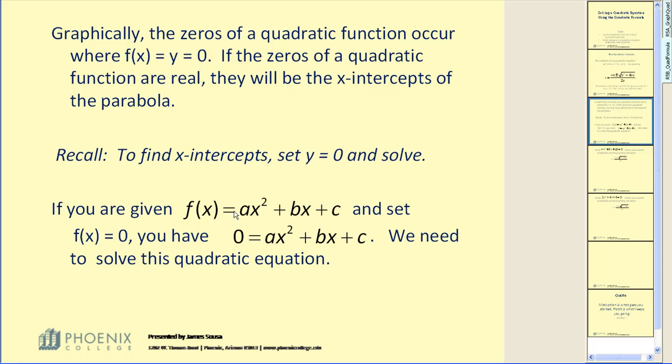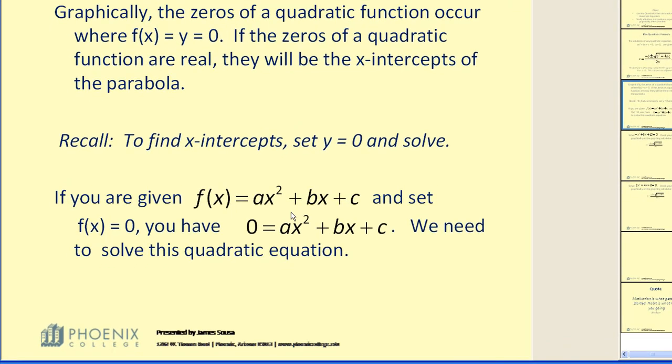If you are given f of x equals ax squared plus bx plus c, and you set f of x equal to 0, you would have basically a quadratic equation set equal to 0. So the solutions to this quadratic equation will also be the x-intercepts, as long as they are real values.